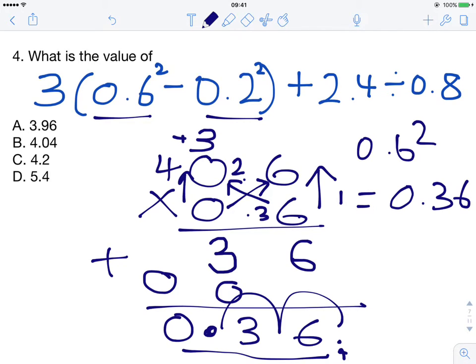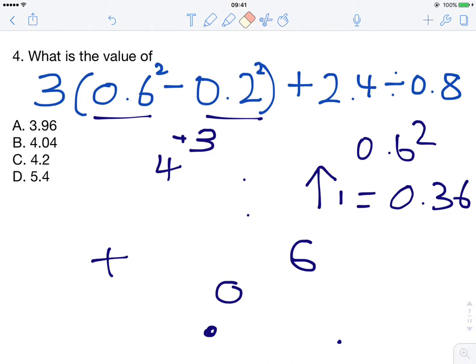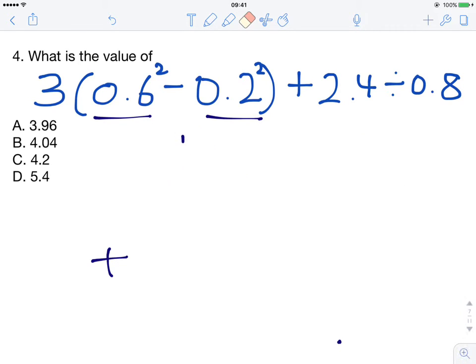We do the same when we're working out 0.2 squared. I'll leave you to do that on your own in your spare time. But the answer to 0.2 squared is 0.04. So we have the answer here to 0.6 squared is 0.36 and the answer to 0.2 squared is 0.04.